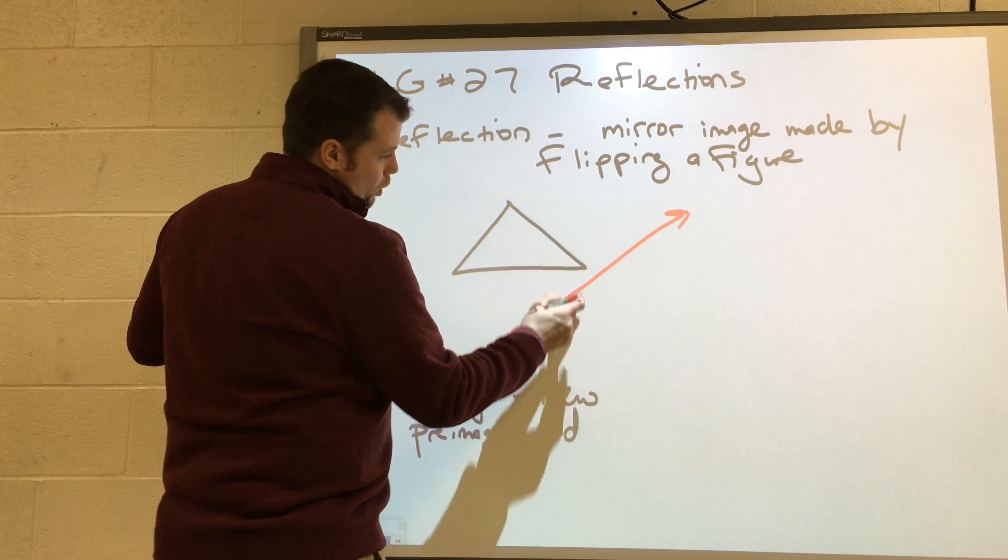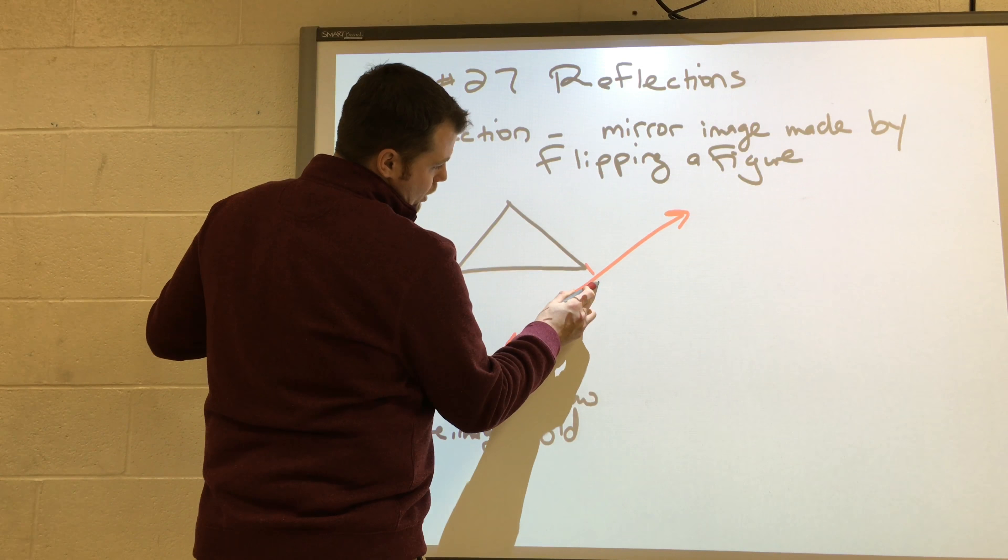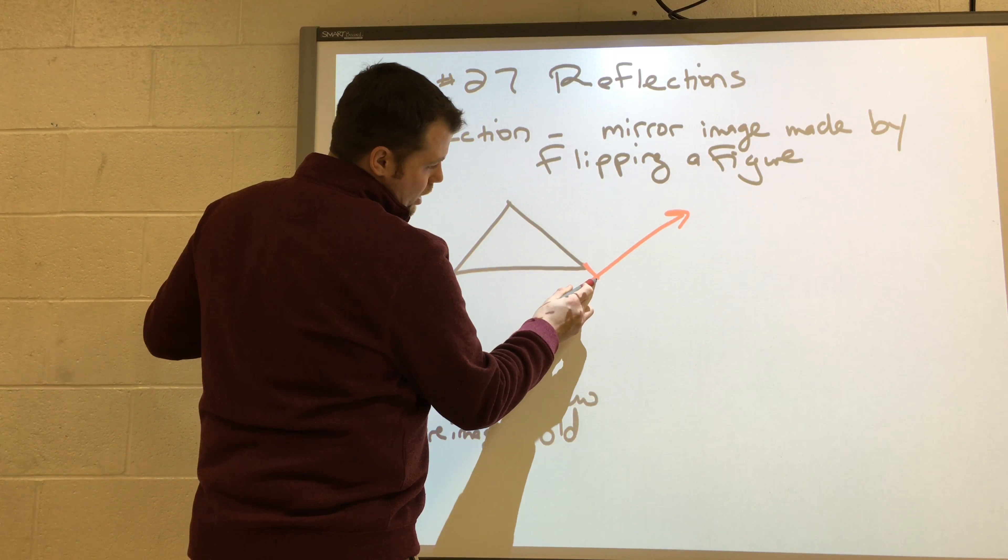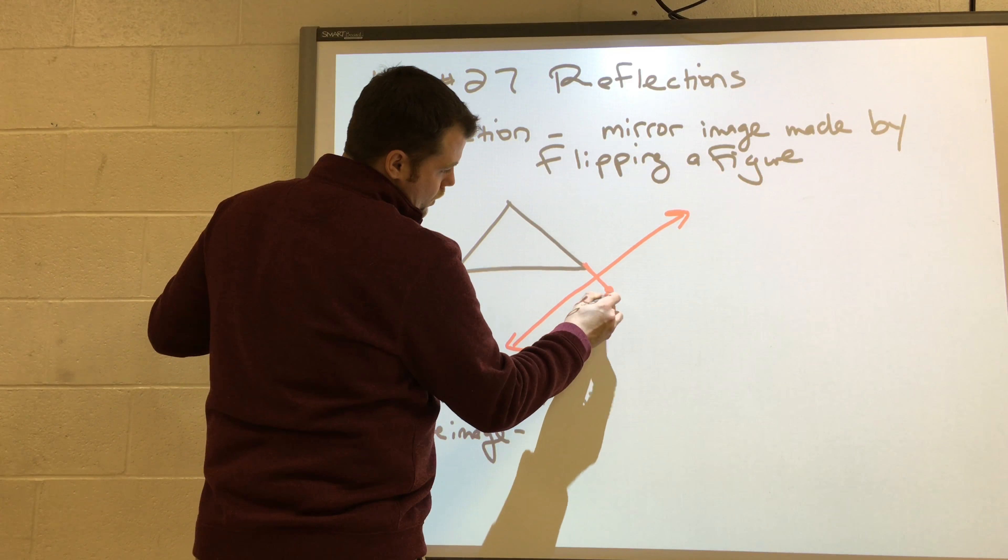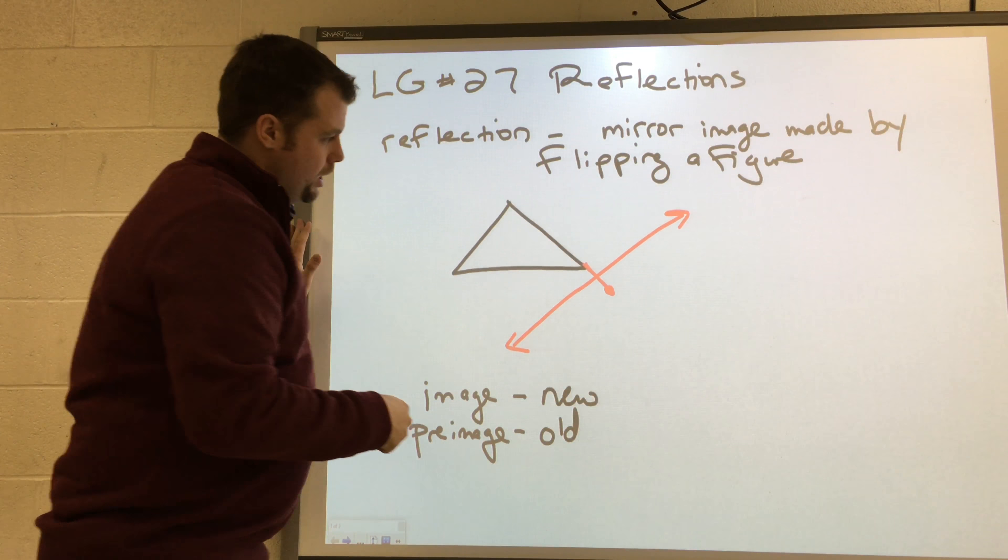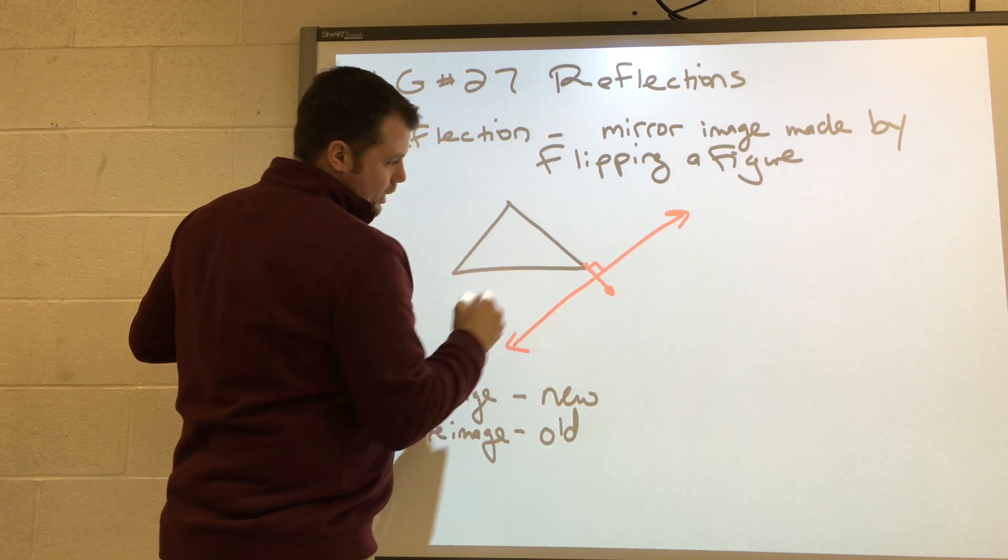So if I start with this point, which is the closest, I'm going to move it that same distance across the line. I'm just estimating, but I try to do that in a perpendicular way.